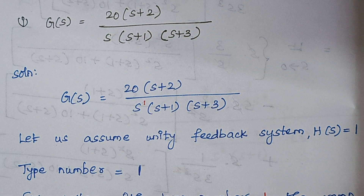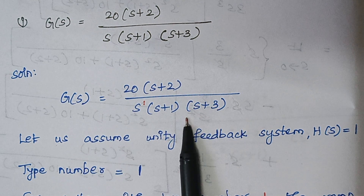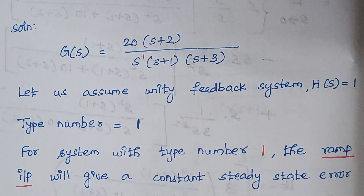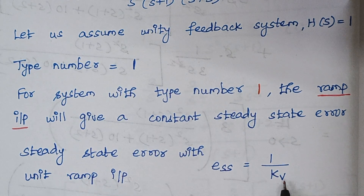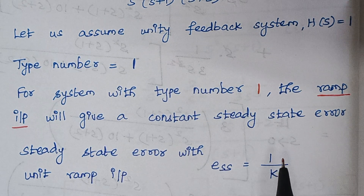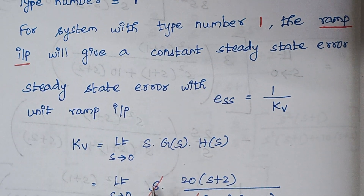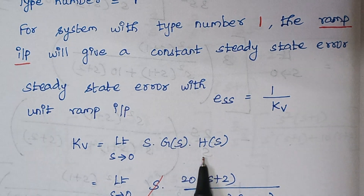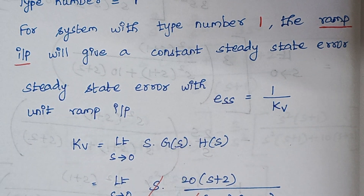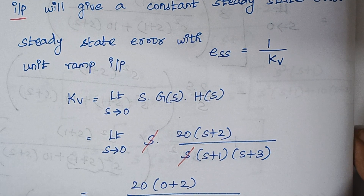It is the ramp input. Whenever a ramp input is given to a type number 1 system, it will produce a steady state error. The steady state error is given by 1/kv, because only for a ramp input can we get a steady state error for type number 1 systems. The formula for kv is: kv equals the limit as s tends to 0 of s·G(s)·H(s). Just substitute the value of G(s) and H(s) equals 1 for unity feedback.